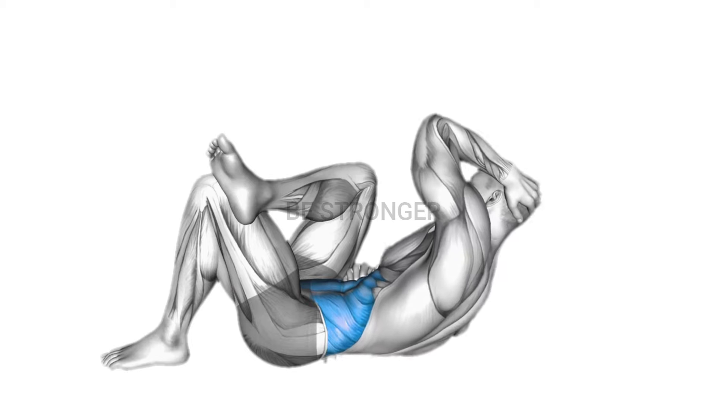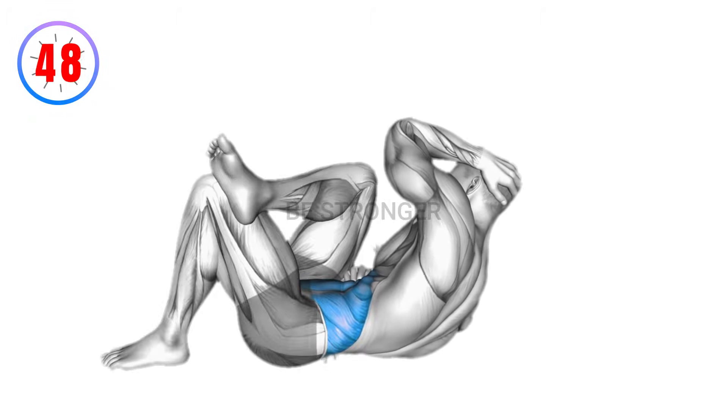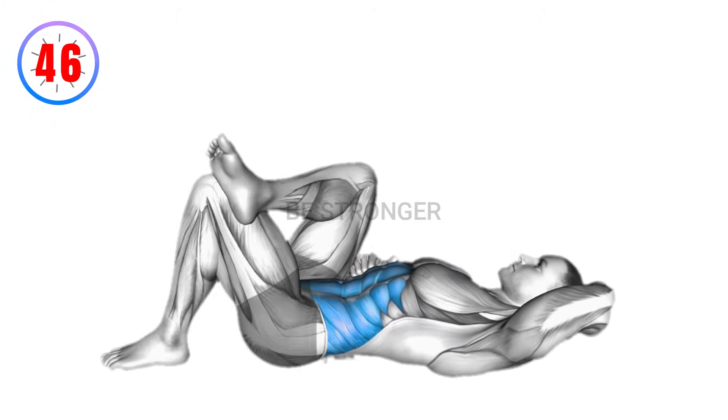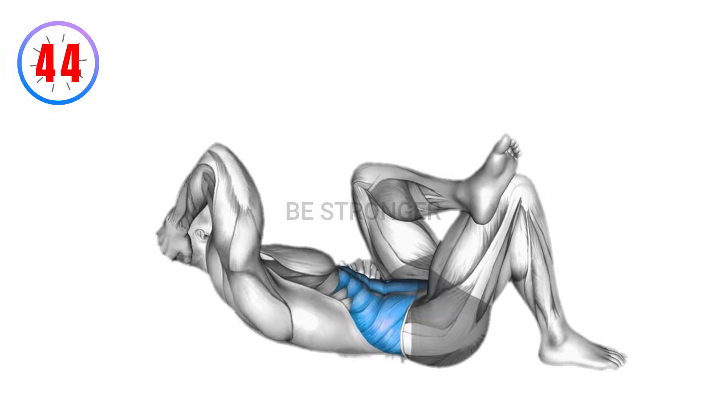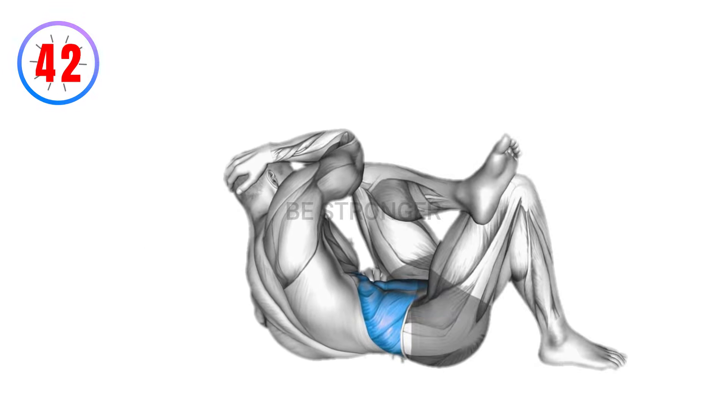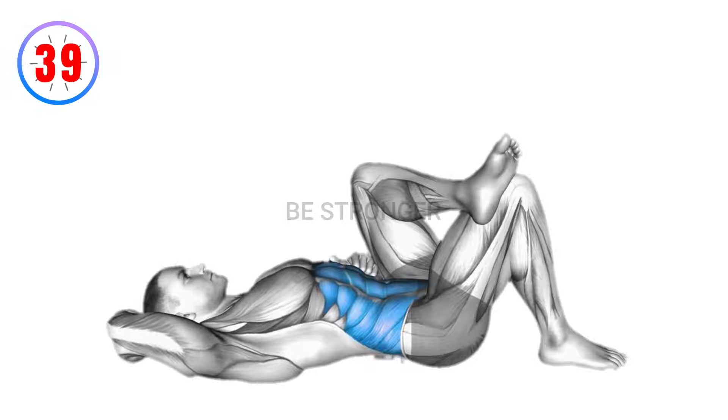Exercise number 4, lying elbow to knee waist. Lie on your back with your knees bent and feet flat on the floor. Place your hands behind your head and bring your right elbow towards your left knee, engaging your obliques and lower belly.